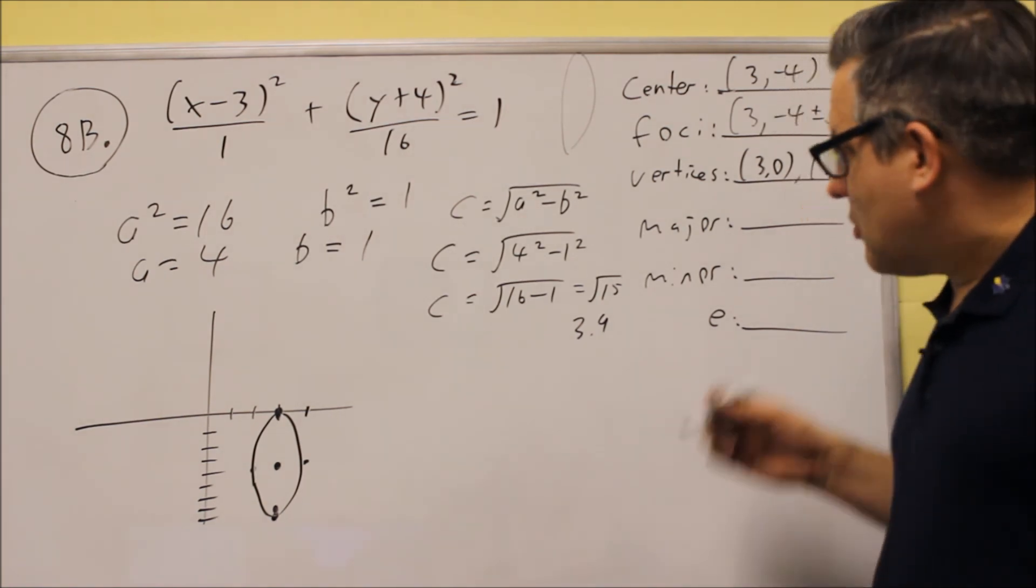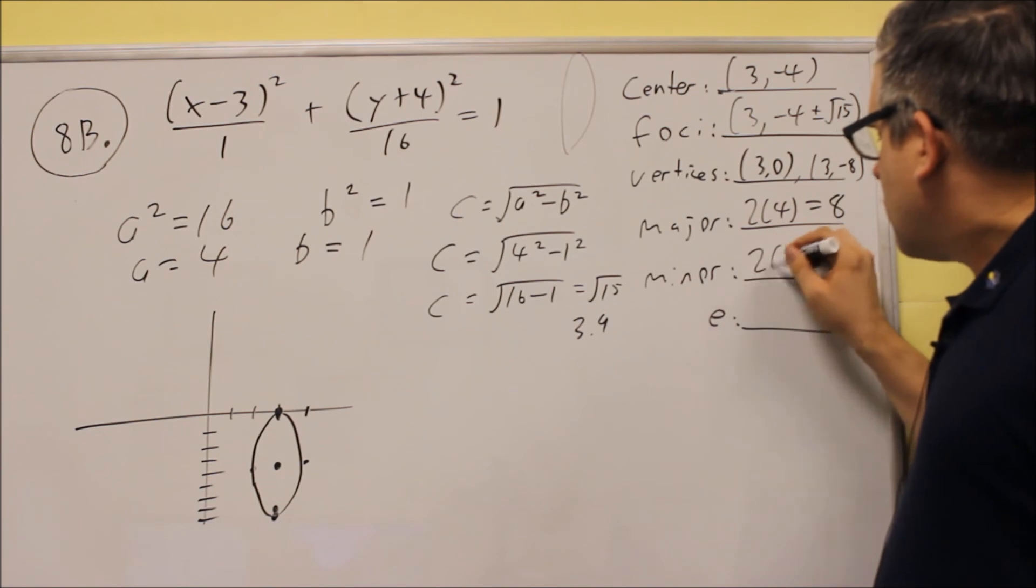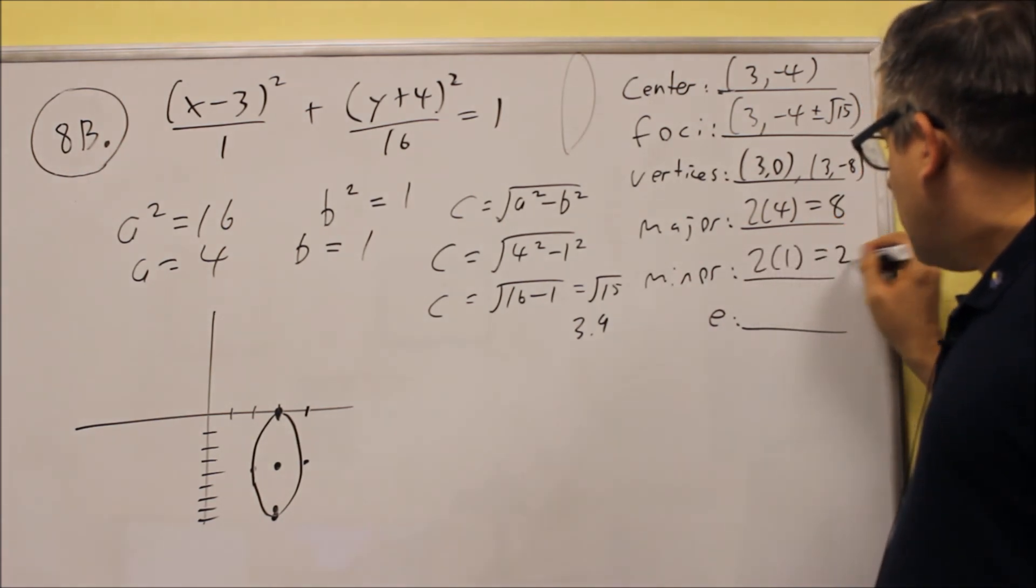The major axis is 2 times a. 2 times 4 is 8. Minor is 2 times b. 2 times 1 is 2.